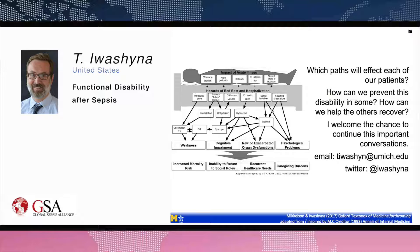Two more questions: first, what are the sequelae for families of patients with sepsis in the ICU? The most important is probably a significant spike in depression in the two years after sepsis among at least older caregivers. There's also reason to think there's probably a substantial financial impact on family members and caregivers that is inadequately understood, and there's substantial additional caregiving burden.